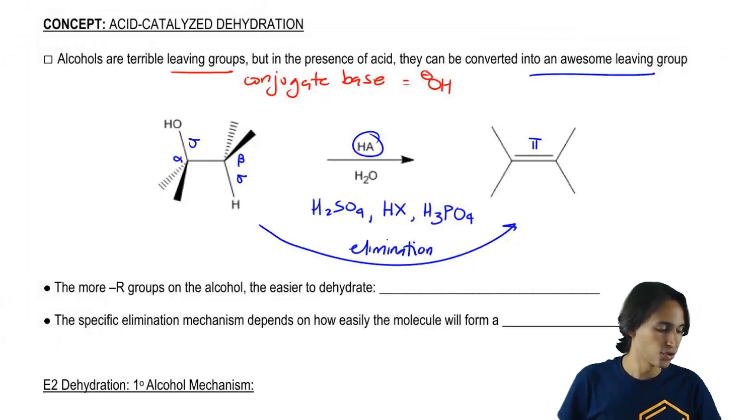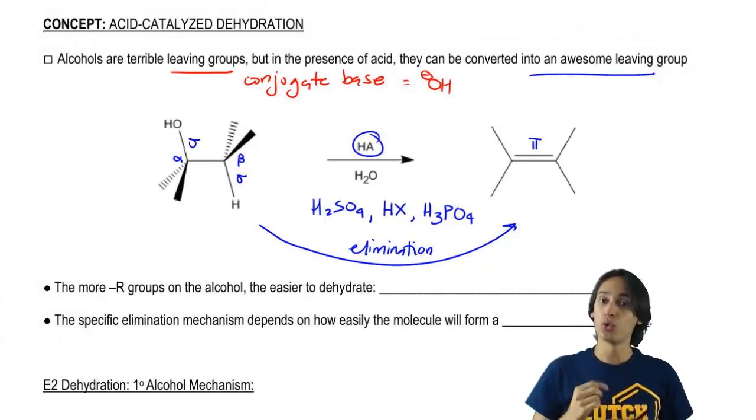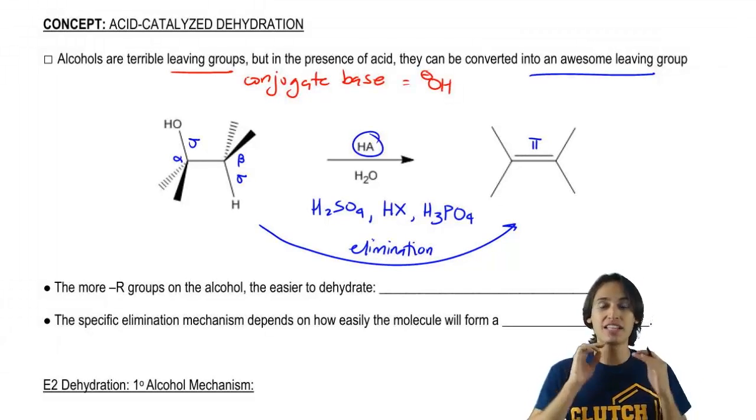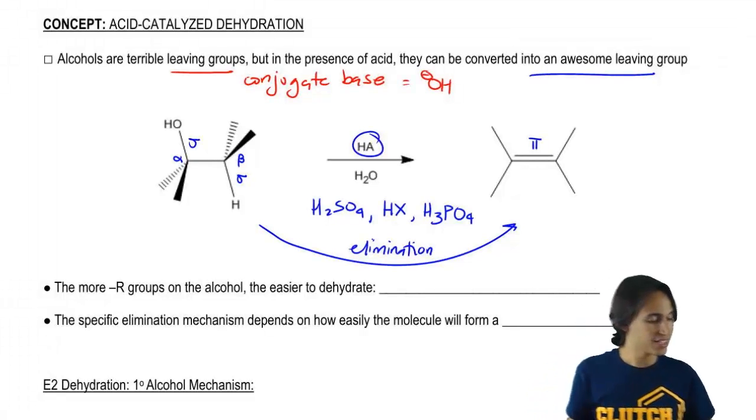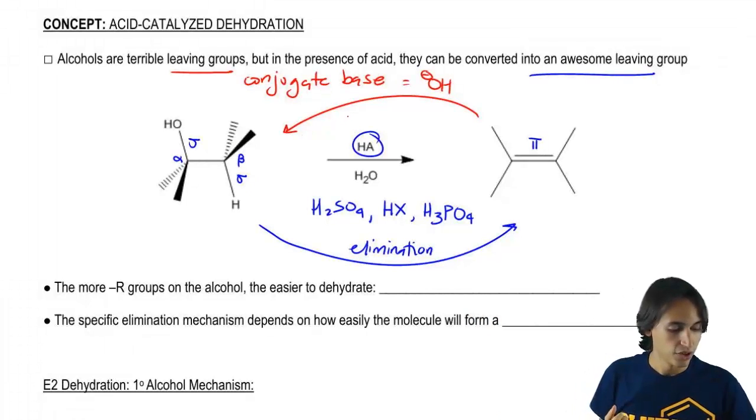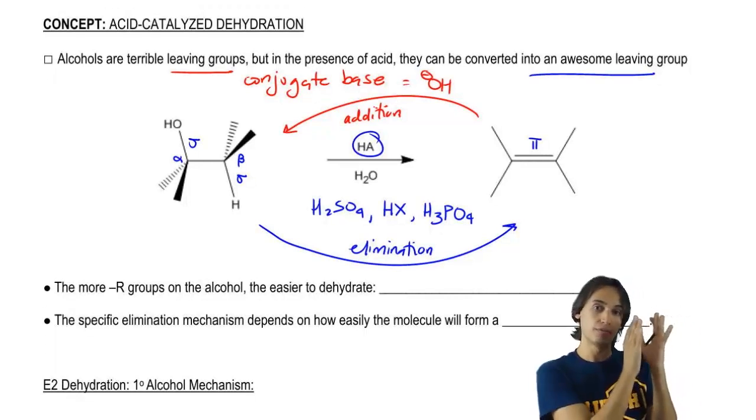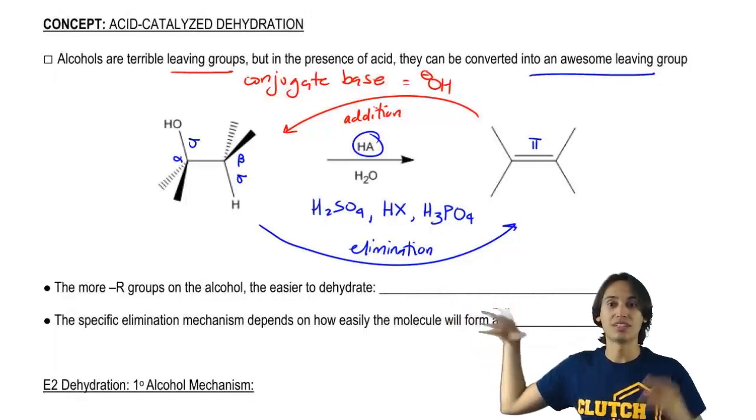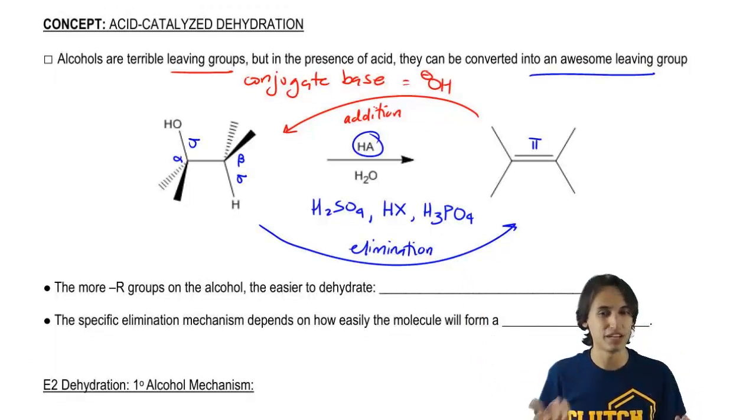Now there's another reaction that you may have already learned or that you will learn soon and that's actually the opposite. It's called acid-catalyzed hydration. Acid-catalyzed hydration is a reaction where we go from the double bond and we go back to the alcohol. This is actually what's called an addition reaction. Because if you remember back to the general types of reactions we talked about, when you take one bond and you make it into two, that's actually addition. When you take two bonds and you make it into one, that's elimination.